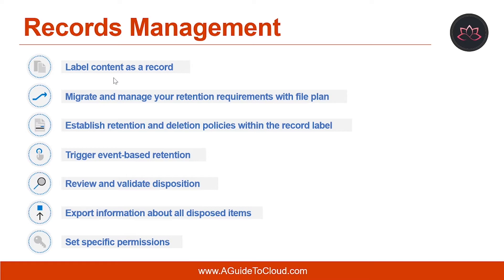The first capability is label content as a record. This helps you create and publish retention labels that mark content as a record, which can then be applied by end users or auto-applied by identifying sensitive information, keywords, or content types.